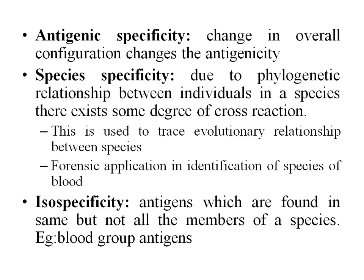Due to some phylogenetic relationships, individuals within a species exhibit some degree of cross-reaction — this is species specificity with respect to antigen. This is used for tracing evolutionary relationships between species and also for forensic identification of the species of blood in crime areas.